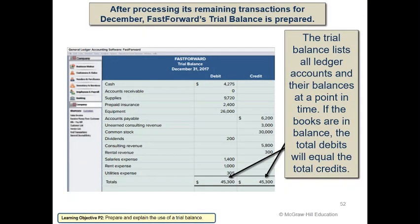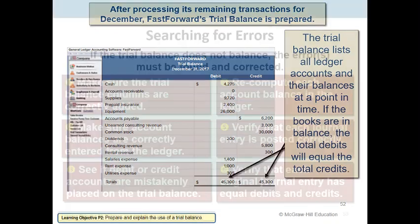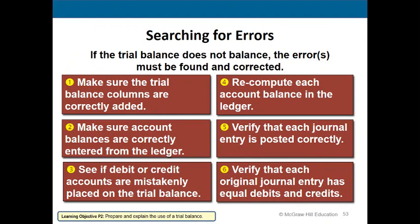Here's our example at December 31, 2017 — all debit account balances equal all credit account balances. If they don't, you must: make sure trial balance columns are added correctly, verify account balances are correctly entered from the ledger, check if debit or credit accounts are mistakenly placed, recompute each account balance in the ledger, verify each journal entry is posted correctly, and verify each original journal entry has equal debits and credits.